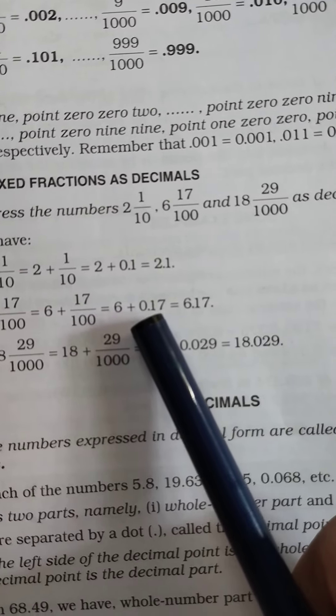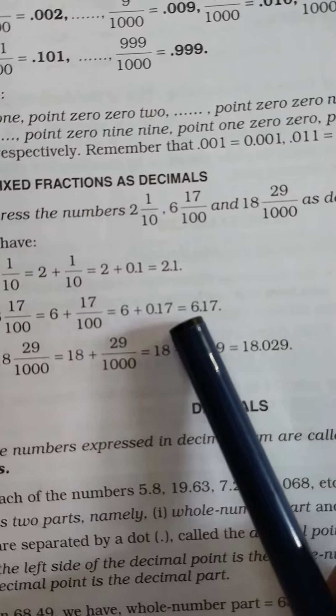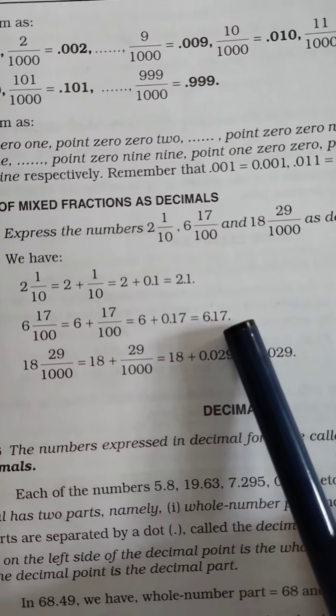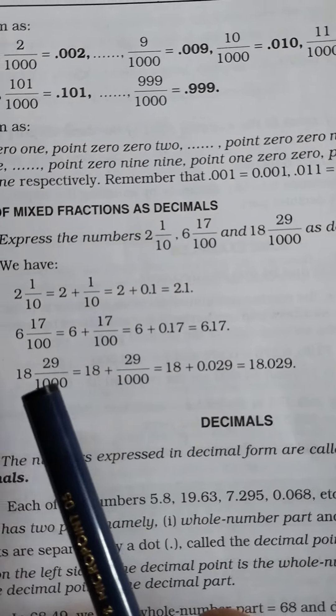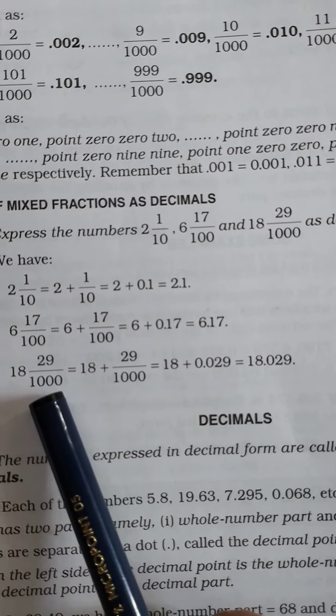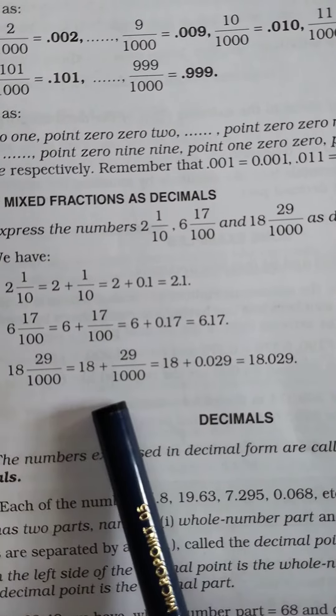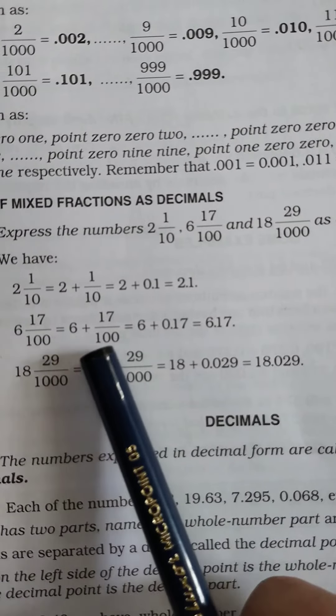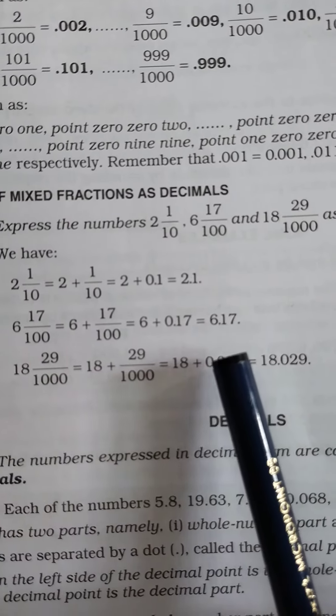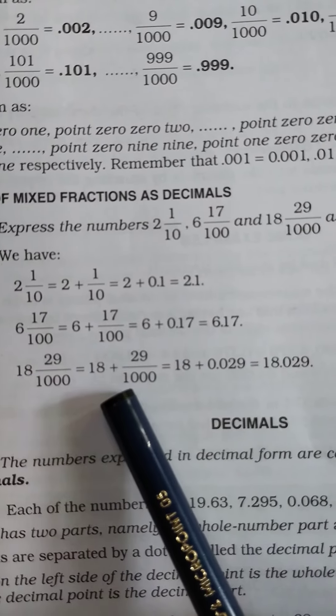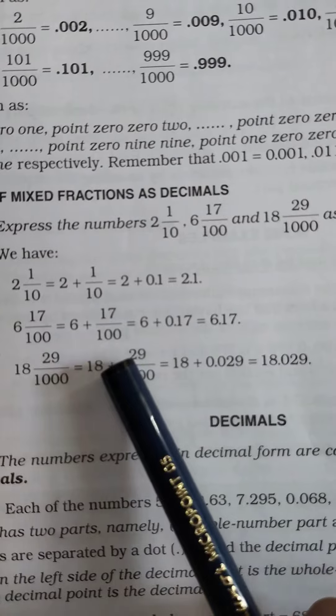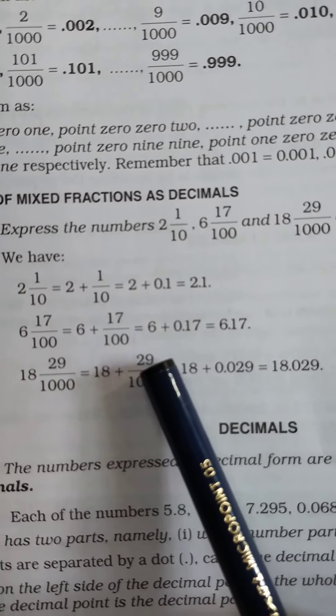Okay, the third example: 18 and 29/1000. So 18 plus 29/1000. Now if we convert 29/1000 into a decimal number, we will get 3 zeros after 1, so after the decimal point there will be 3 digits. But there are only two digits in 29, so we have to bring one zero before the 2.